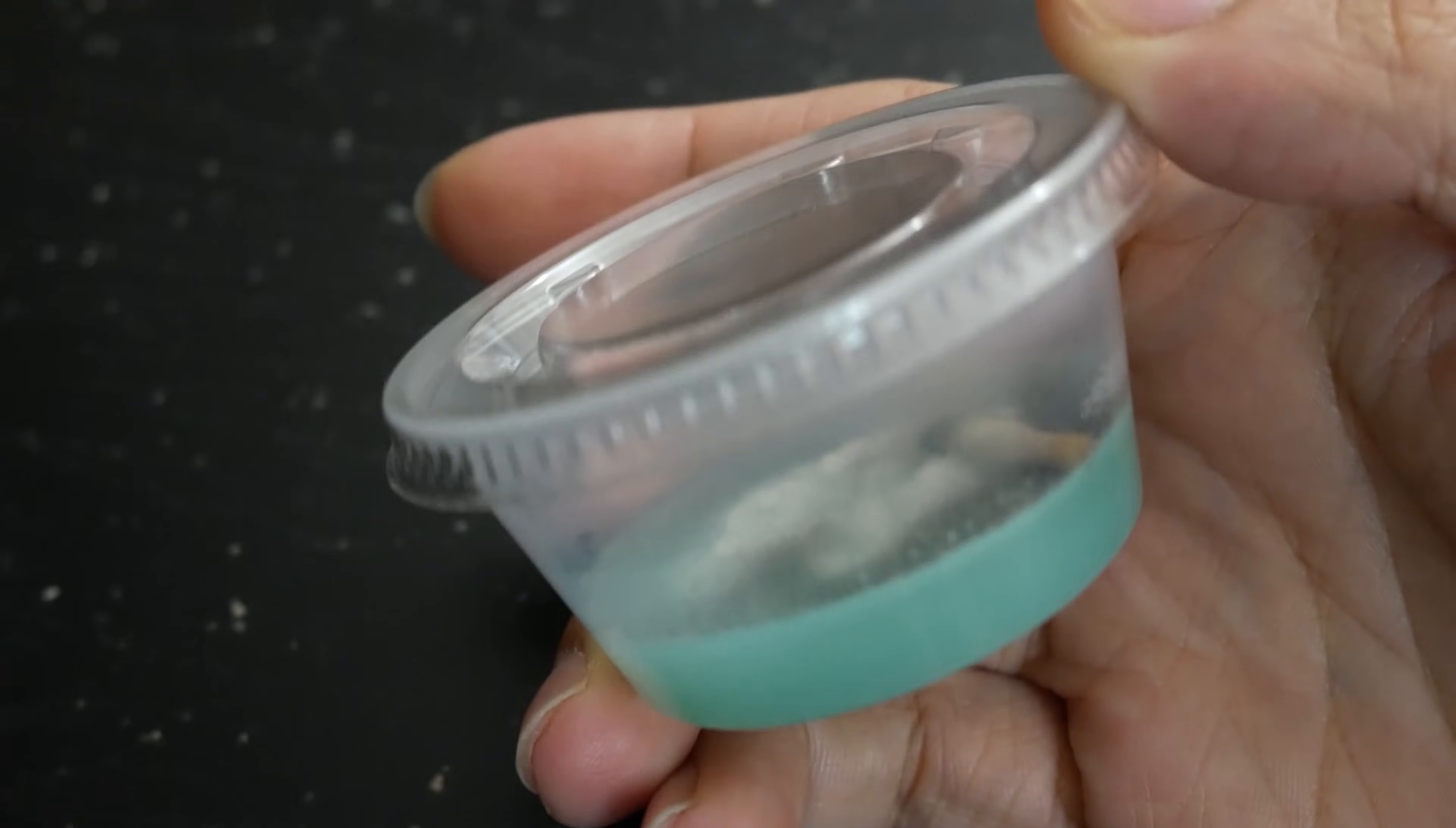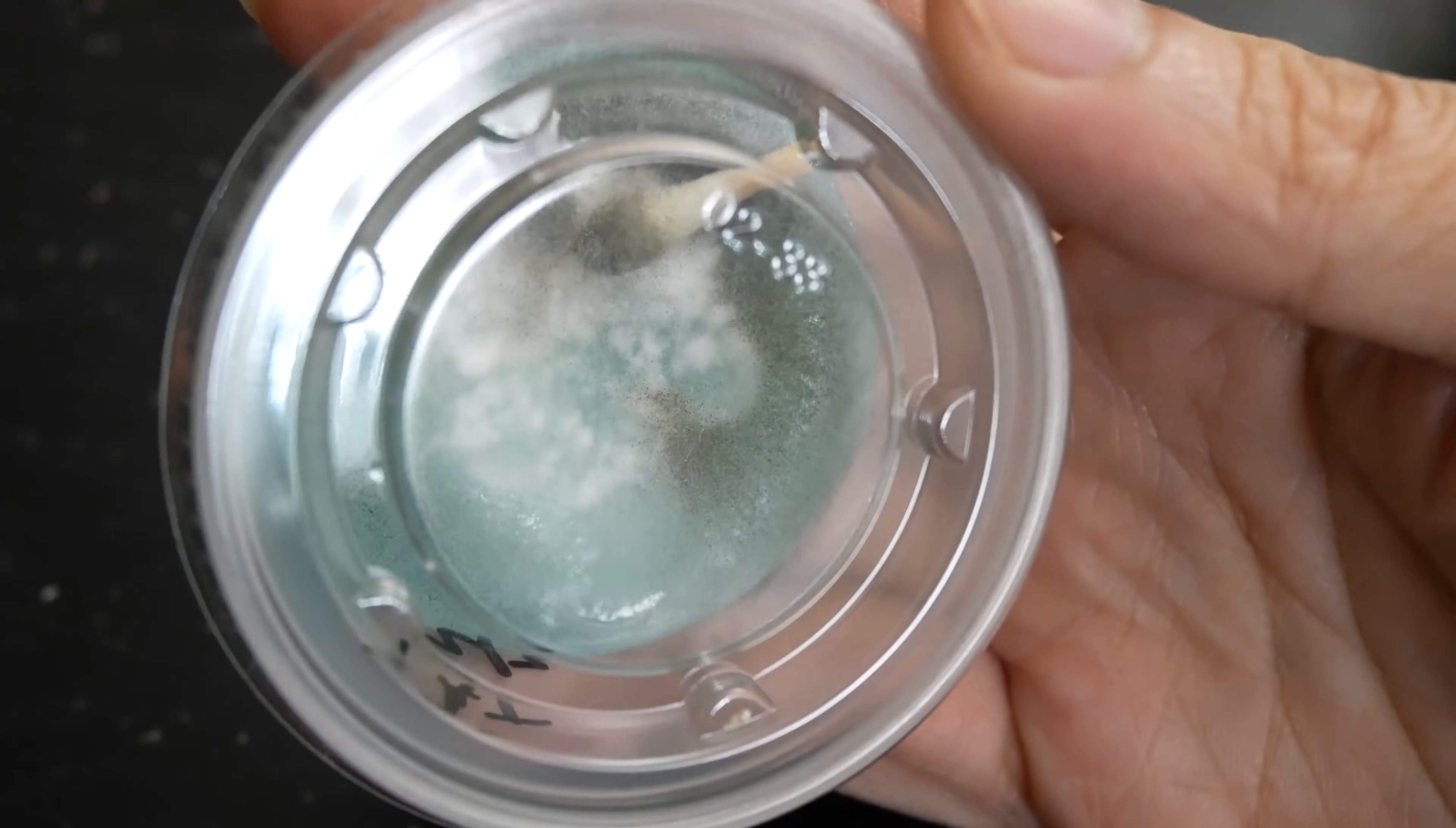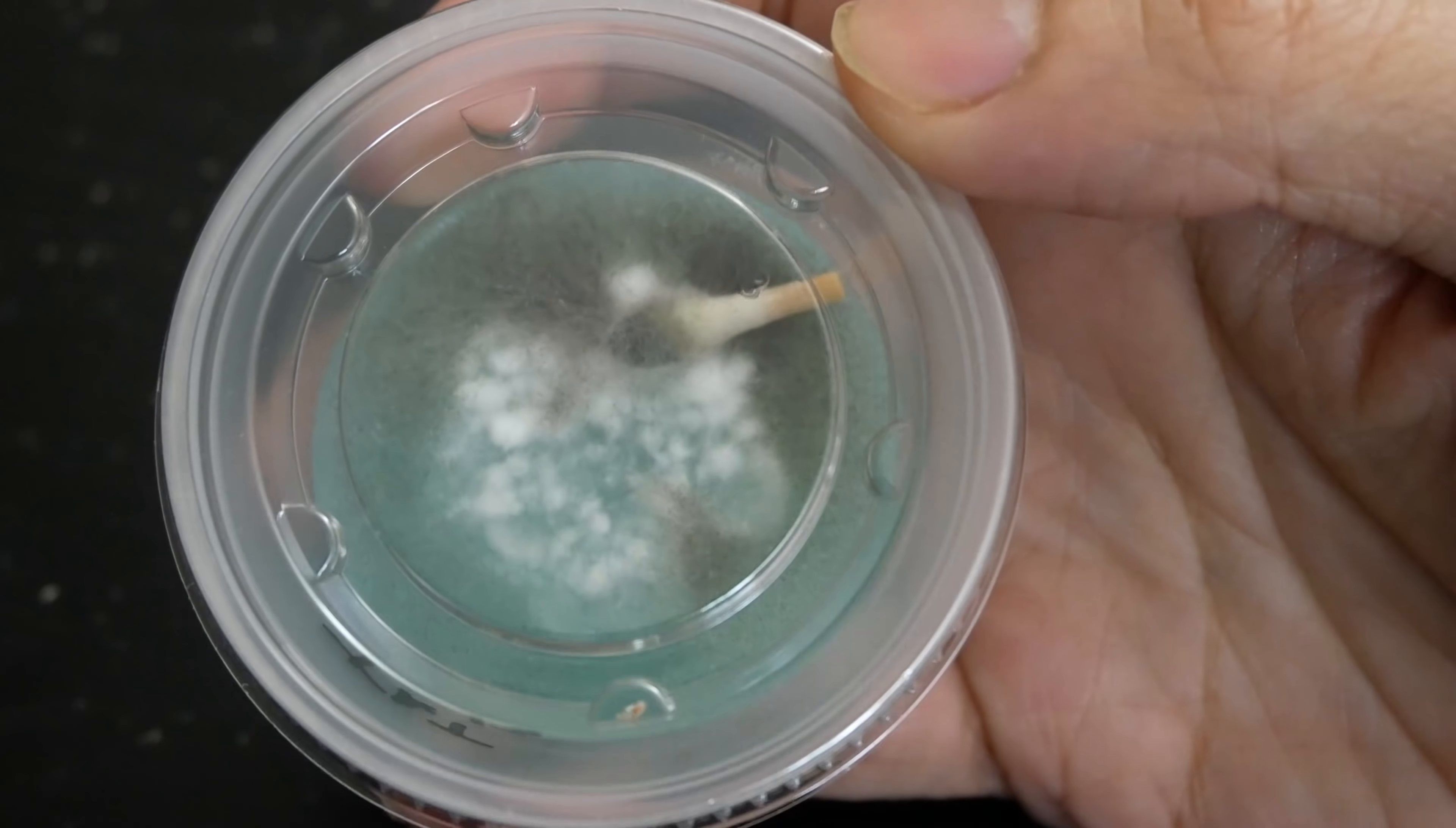Unfortunately, I've let this cup gone a little bit too far and the pin mold's taking over a majority of the real estate inside of this dish. So it's going to be very difficult to try and clean this up from the contamination. I figured it'd be very neat to show you guys what contaminations would look like when you're germinating from spores.